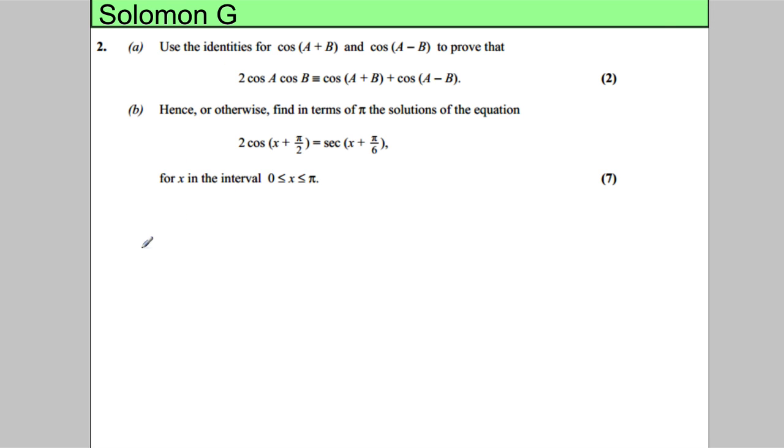that cosine of A add B is the following: it's cosine A cosine B subtract sine A sine of B, and similarly it tells us that cosine of A subtract B is going to equal cosine A cosine B add sine A sine B.